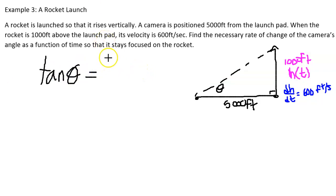So I've got h(t), which is variable, it's a change in quantity, over 5000, which is a fixed quantity. Now what is it that we're trying to solve for in this related rate problem? It says find the rate of change of the camera's angle. So what we're really looking for here is dθ/dt.